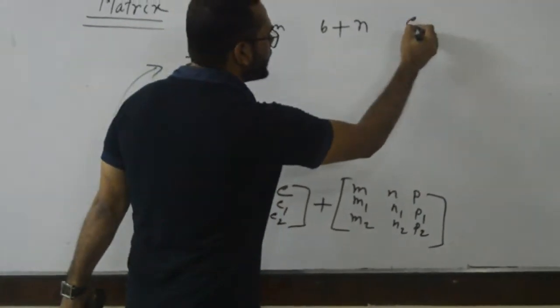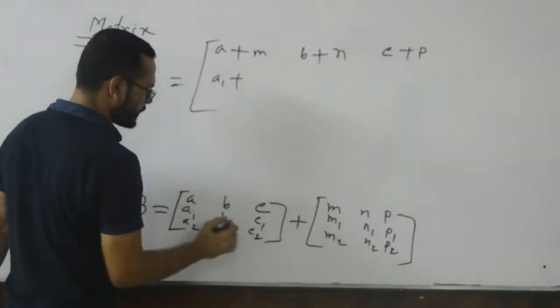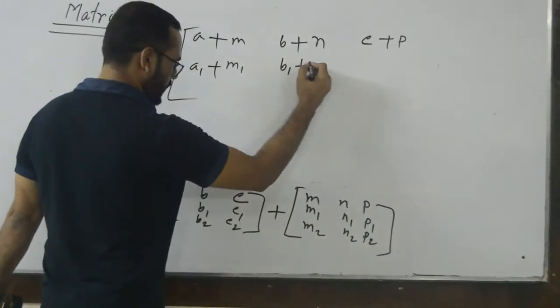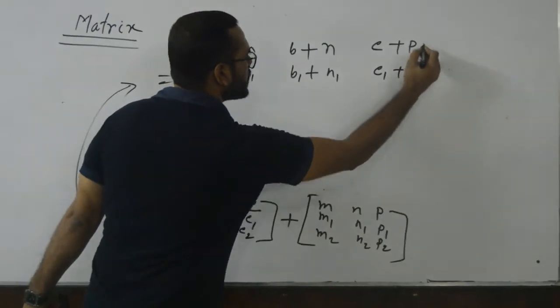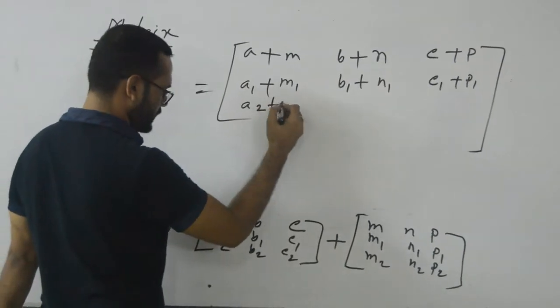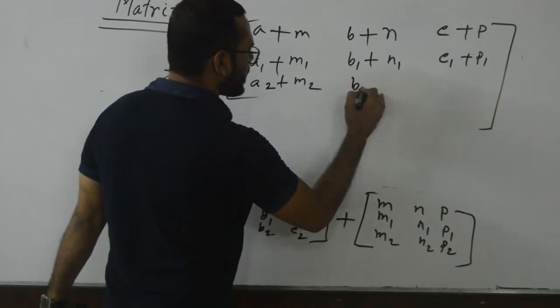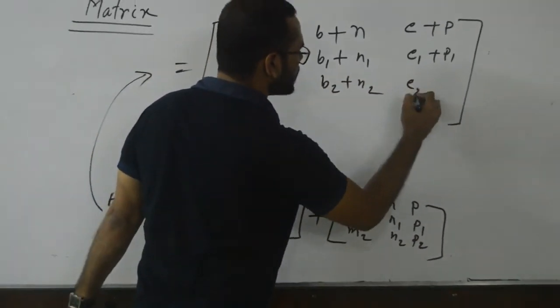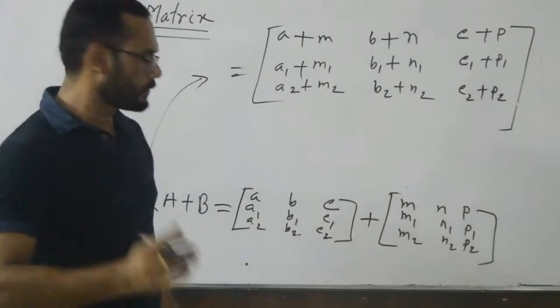Sequentially: c plus p, and then a1 plus m1, b1 plus n1, and then c1 plus p1. After that, a2 plus m2, b2 plus n2, c2 plus p2. And this is the addition of two matrices.